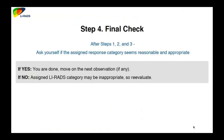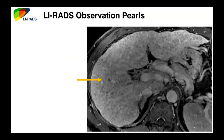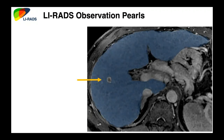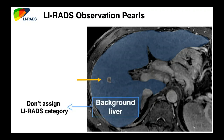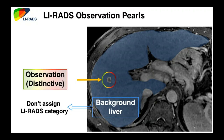After you've gone through the table, do a final check — does this make sense? If it doesn't, try again, go to the website, or ask a colleague. Also remember: when looking at observations in the liver, make sure you're identifying a real observation versus the heterogeneous background liver. Don't assign categories to background liver, only to distinct observations you can identify.